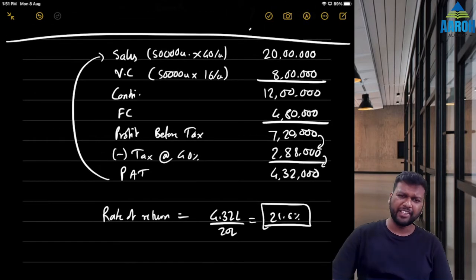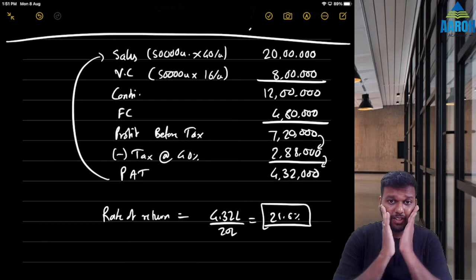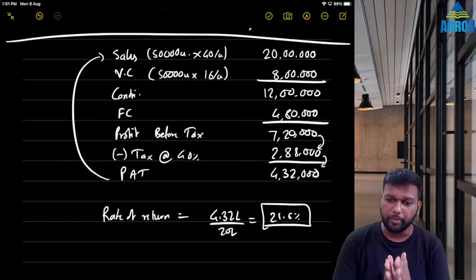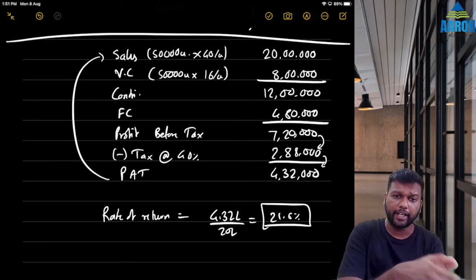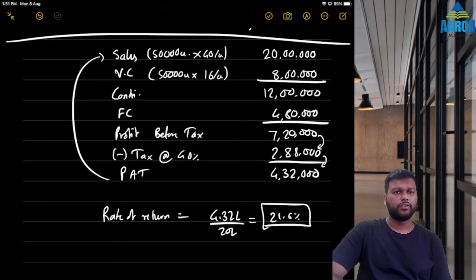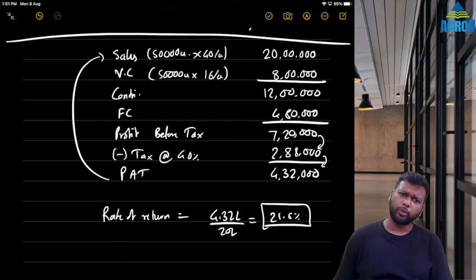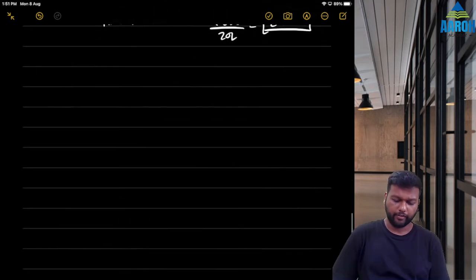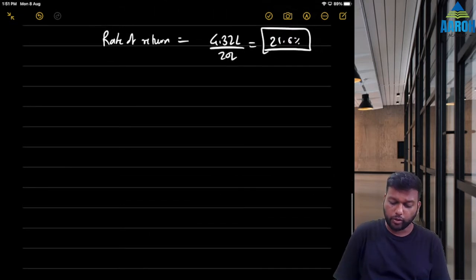Rate of net return = 4,32,000 ÷ 20,00,000 = 21.6%. This was the basic question — there was nothing about composite BEP here. Now the second part is about composite BEP.